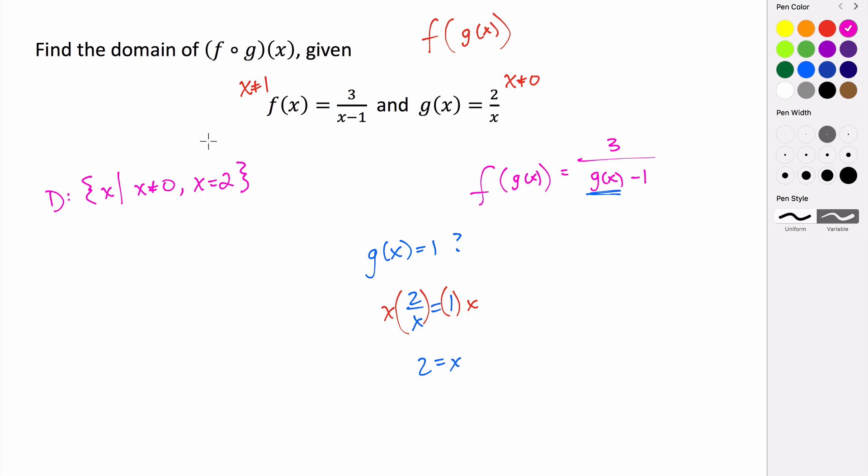And that is our domain. So the domain of this composition is the set of all x such that x cannot equal 0 and x cannot equal 2. If x is either of those values, it will make our composition undefined. The first one makes g of x undefined, and the second one makes f of g of x undefined. So neither of those can be included in our domain.